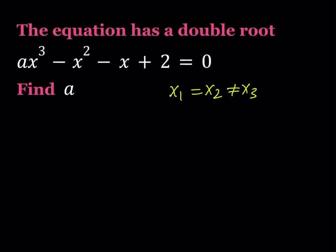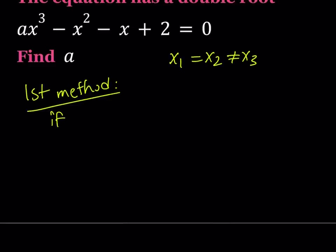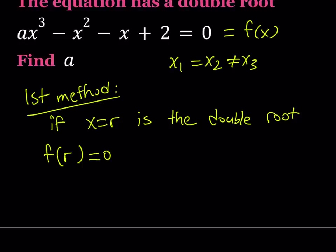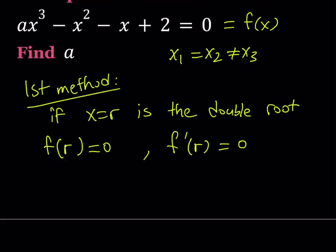I'm going to be presenting two approaches here. The first method: if x equals r is the double root, then we can say two things. f of r needs to be 0 — where f means I'm setting this whole thing equal to f of x — and we also get f prime of r is equal to 0. We're going to be using calculus, because if we have a double root, that is going to be a root of the original polynomial as well as the first derivative. You can easily check that by writing it in terms of its roots.